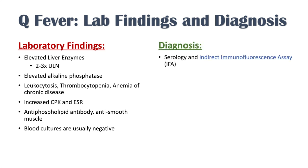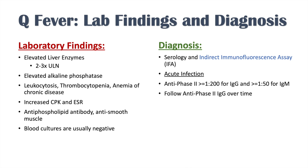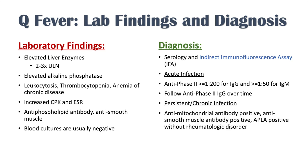Diagnosis can occur through serology and indirect immunofluorescence assay. Acute infections are diagnosed by looking at antiphase 2 — IgG greater than or equal to 1:200 and IgM greater than or equal to 1:50. For persistent chronic infection, individuals might have anti-mitochondrial antibody positive, anti-smooth muscle antibody positive, and antiphospholipid antibody positive — all without a known rheumatologic disorder. We look at antiphase 1 IgG greater than 1:800, which is one of the Duke criteria for endocarditis.